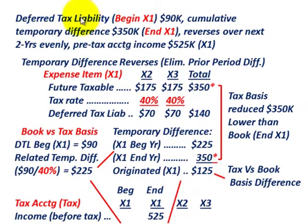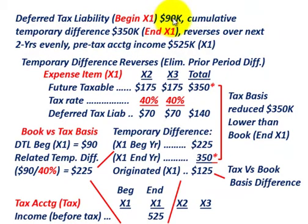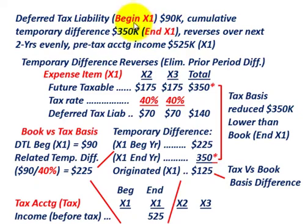What we're going to be looking at here is a deferred tax liability. We're going to start out with a beginning balance in this deferred tax liability for year x1. We're going to have a beginning balance of $90,000 and a cumulative temporary difference of $350,000 at the end of year x1. We're going to be looking at a beginning balance versus an ending balance and how we account for that when determining the deferred tax liability.